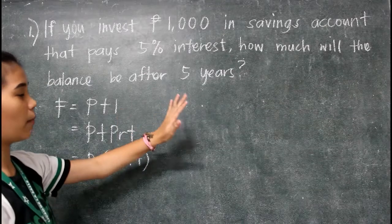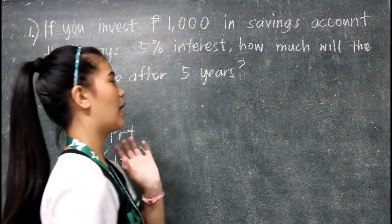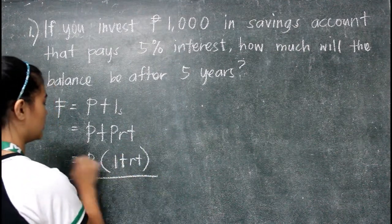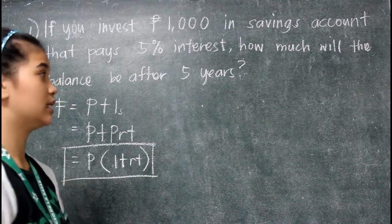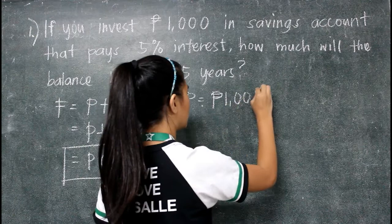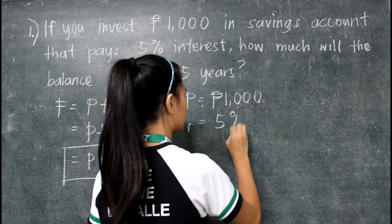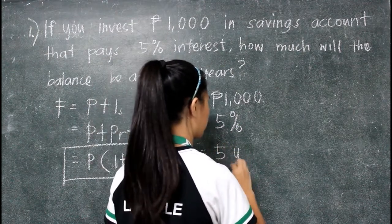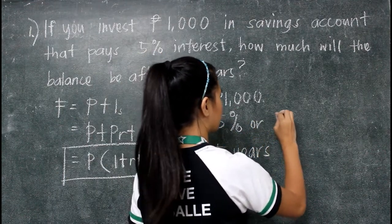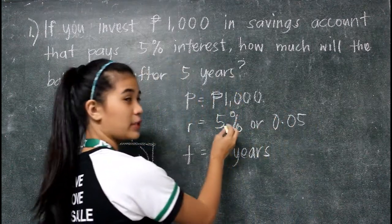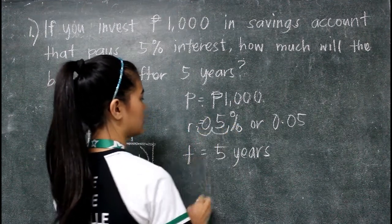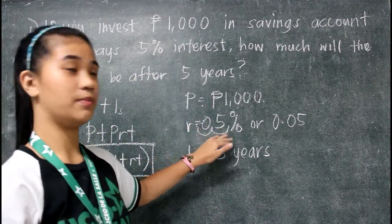In this problem, we don't have the actual value of the interest, so we are going to use the formula P times 1 plus RT. We have the value of P, which is 1,000 pesos; R is 5%; and T is 5 years. This 5% will become 0.05, since the rate is derived as a decimal.